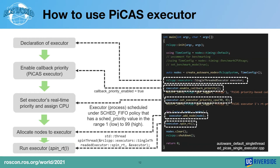This is an example code to use the PICAS executor on the reference system. The executor is declared the same as ROS2 default. If you want to use the PICAS scheduler, use the API function to set callback priority enable to true. Then assign real-time priority and CPU number to the executor using the APIs. After that, allocate nodes to the executor. In the reference system, all nodes are already generated by the create-autoware-nodes function, so we just put nodes into a single executor in this example. Lastly, the PICAS executor should be run with spinRT. If you want to use multiple executors, instead of executor.spinRT, use the following line because we need to create multiple threads and bind them to individual executors.